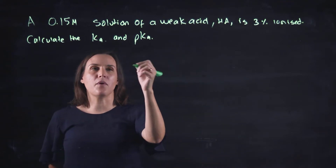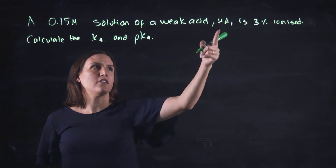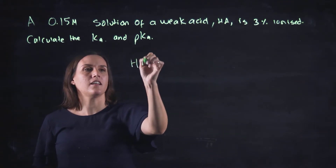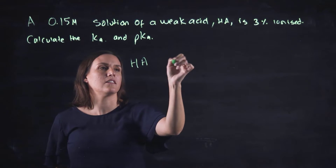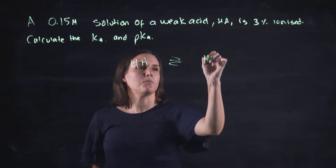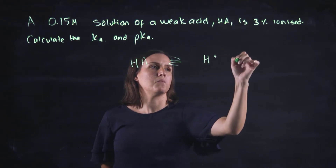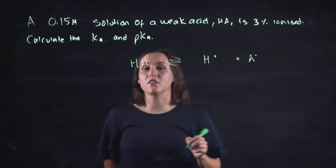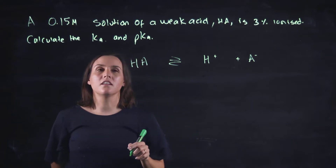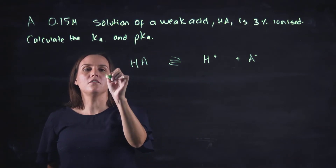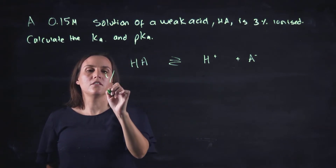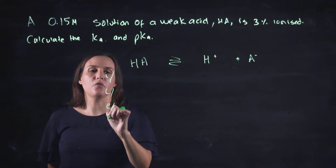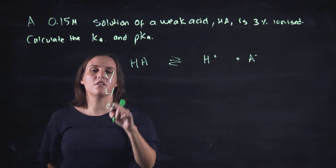First of all, let's start by writing out the equation. HA, a classic weak acid, dissociates into H⁺ plus A⁻. Then we set up initial, change, equilibrium — your ICE table.